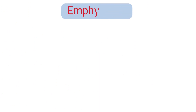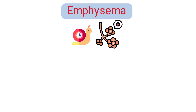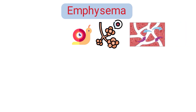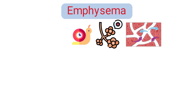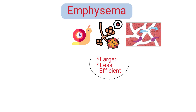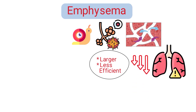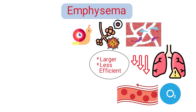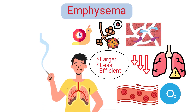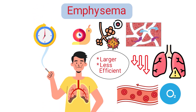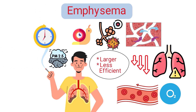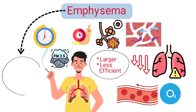And then we have emphysema, which involves the gradual destruction of the alveoli — the tiny air sacs in the lungs where oxygen exchange occurs. This destruction leads to the formation of larger, less efficient airspaces, reducing the lungs' capacity to transfer oxygen into the bloodstream. The primary cause is smoking, but long-term exposure to airborne irritants can also contribute. Emphysema is often grouped under the COPD umbrella, along with chronic bronchitis.